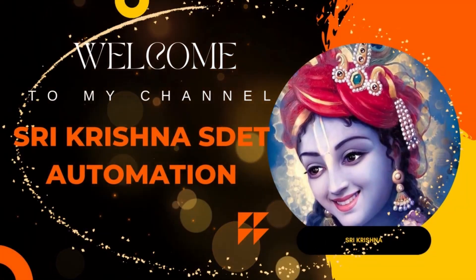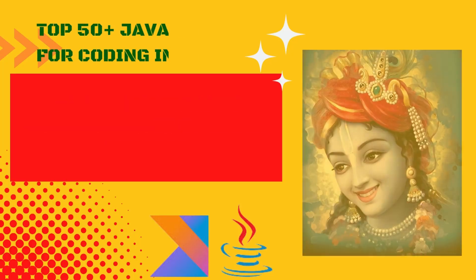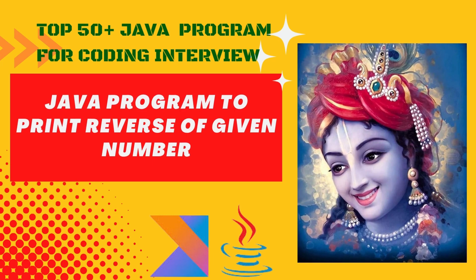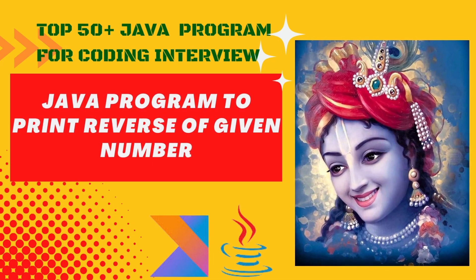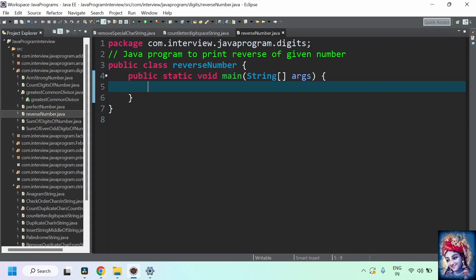Welcome! In this video we are going to see a Java program to print a given number in reverse order. For example, take the number 456 — if you print it in reverse order, the output will be 654. Let's practically implement this program.